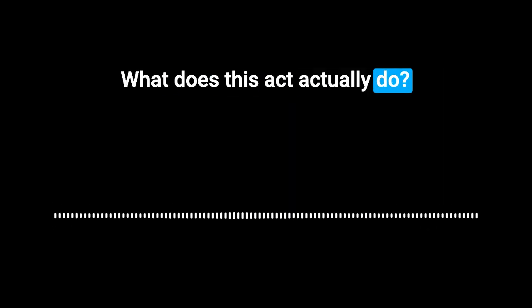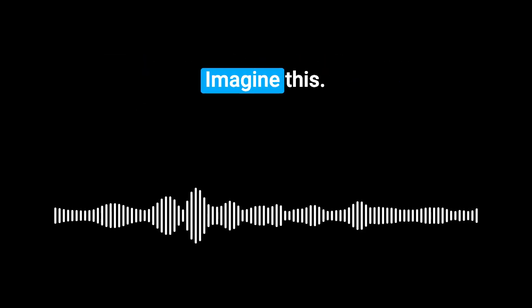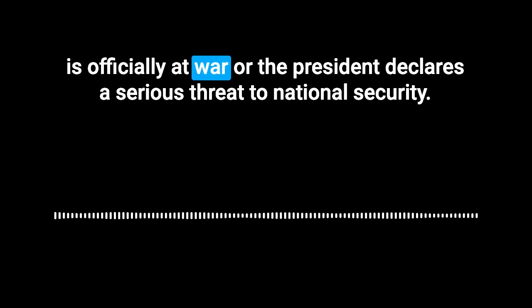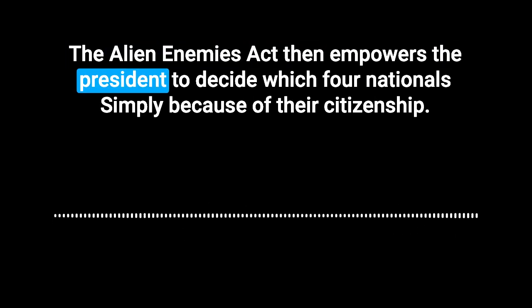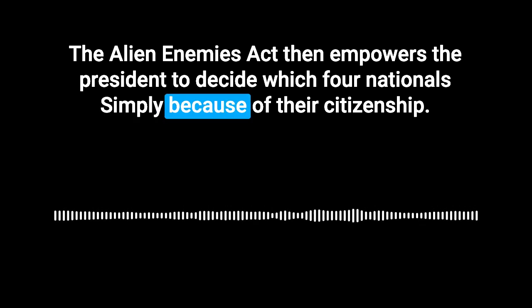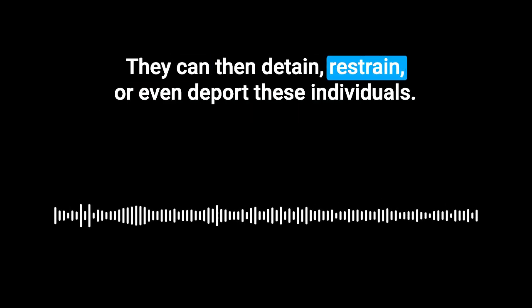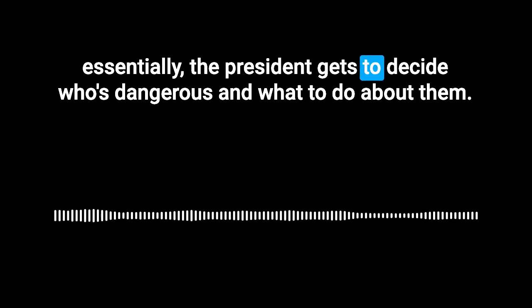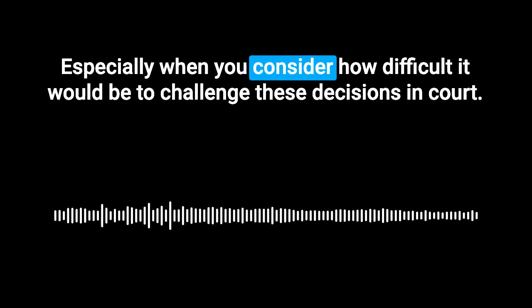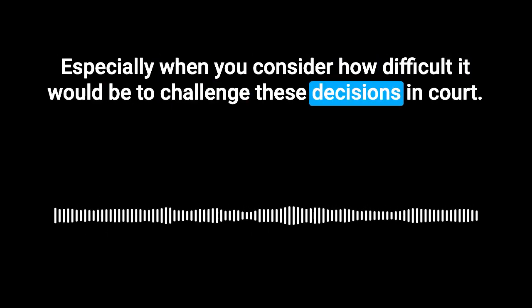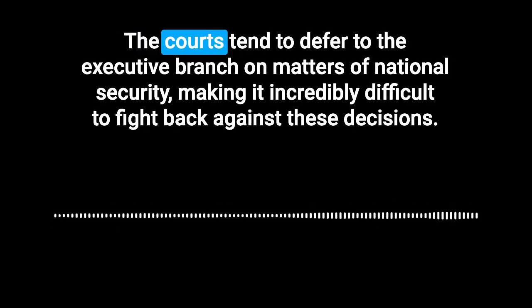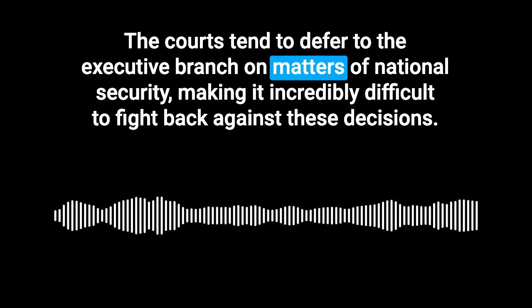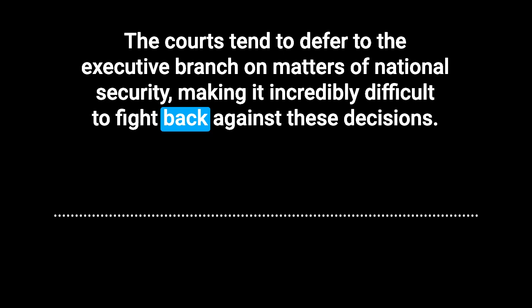What does this act actually do? The U.S. is officially at war, or the president declares a serious threat to national security. The Alien Enemies Act then empowers the president to decide which foreign nationals pose a threat, simply because of their citizenship. They can then detain, restrain, or even deport these individuals, even if they haven't personally done anything wrong. The president gets to decide who's dangerous and what to do about them, all because of their passport. The courts tend to defer to the executive branch on matters of national security, making it incredibly difficult to fight back against these decisions.